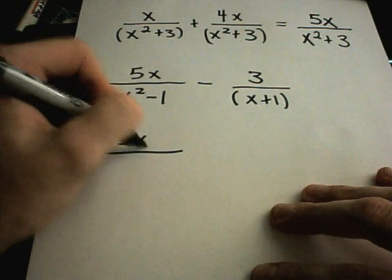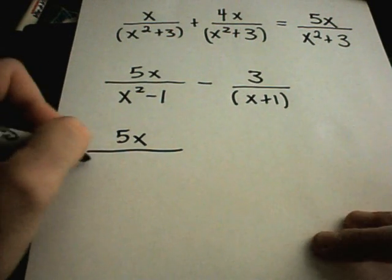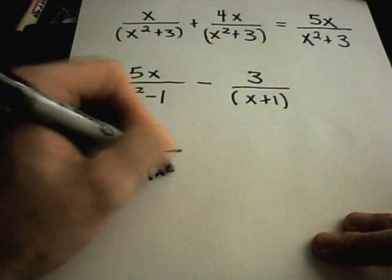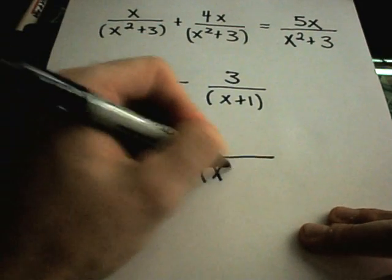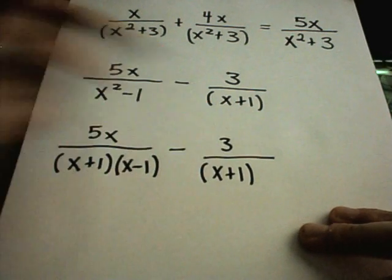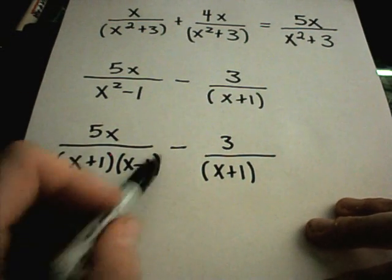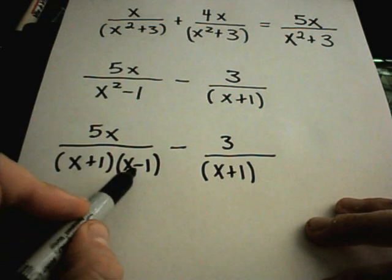I've got 5x on top. Recall, x squared minus 1 is a difference of perfect squares, so I can factor that as x plus 1, x minus 1. x plus 1 won't factor any further, so I'll just leave it alone. Now I look at my fractions. In the bottom of this fraction, on the left side, I see x plus 1, x minus 1. On the right side, I only have an x plus 1.